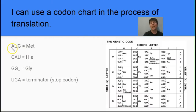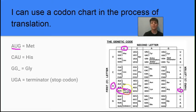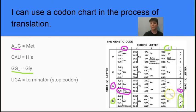Our next learning target is to understand how to use a codon chart in the process of translation. Let's look at an example codon: AUG. To read the chart, the first base A is read on the side, the second base U is read along the top — that puts us in the third row, first column — and G is at the very bottom of that. So the codon AUG tells the ribosome to insert the amino acid Met, or methionine, into a protein chain. The codon GG, no matter what the third base is, will introduce the amino acid glycine into the amino acid chain.